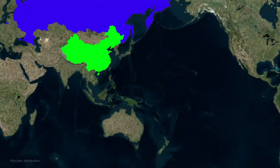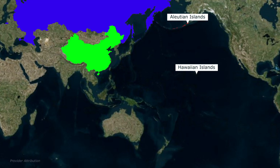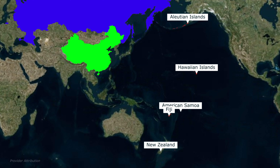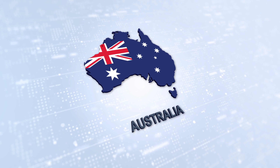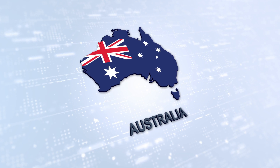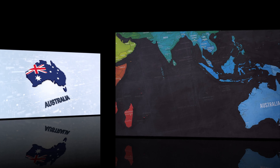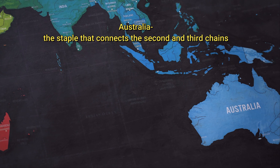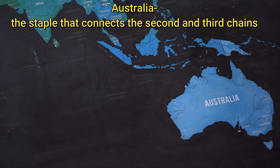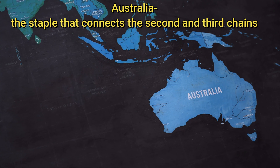The third island chain kicks off at the Aleutian Islands, making a southward journey through the heart of the Pacific Ocean, hitting iconic spots like the Hawaiian Islands, swinging by American Samoa, passing through Fiji, and finally reaching New Zealand. Australia steps in as a key staple connecting the second and third chains, acting as an anchor in this island-hopping strategic narrative and adding an extra layer of cohesion to the overall strategic framework.